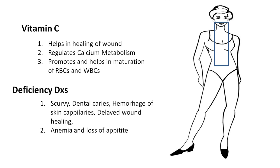Skipping B vitamins for now, let's go to Vitamin C. Moving down from Vitamin A into the central area — here you see the mouth — Vitamin C helps in wound healing. Its deficiency causes scurvy, which is bleeding from the gums, dental caries, hemorrhage of skin capillaries, and delayed bone healing.